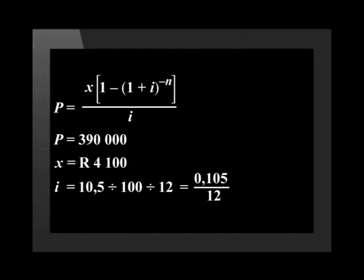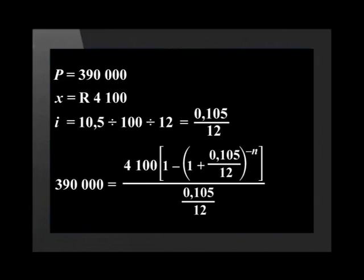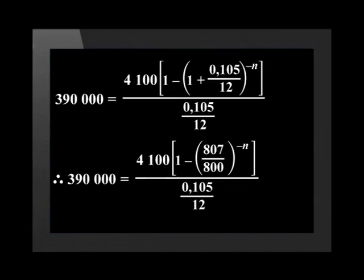P equals 390,000 rand, x equals 4,100 rand, and i equals 10.5 divided by 100 divided by 12, which equals 0.105 divided by 12. Substituting will give us 390,000 equals 4,100 bracket 1 minus bracket 1 plus 0.105 over 12 bracket to the power of minus n bracket divided by 0.105 over 12.